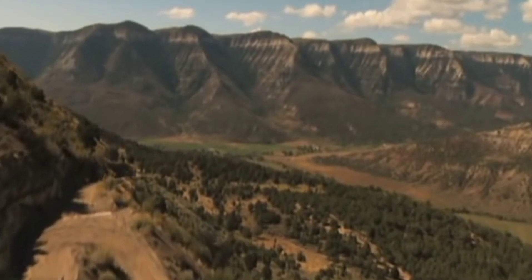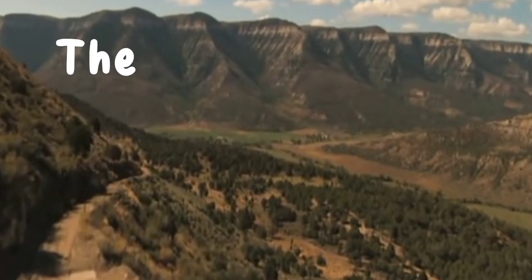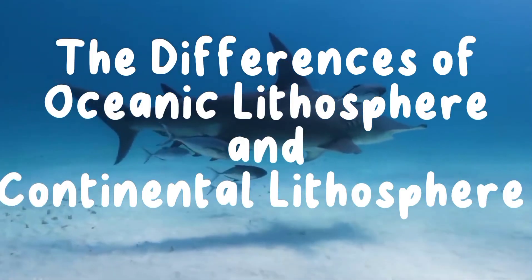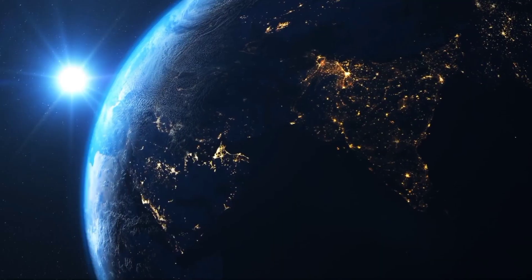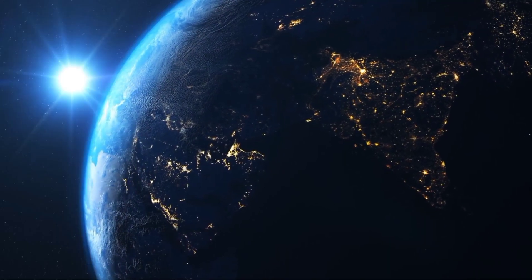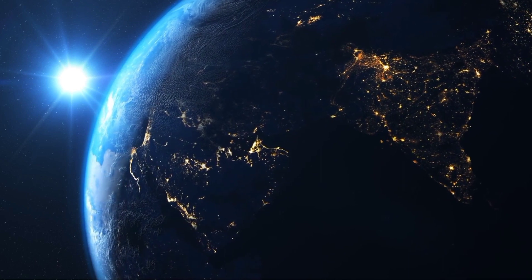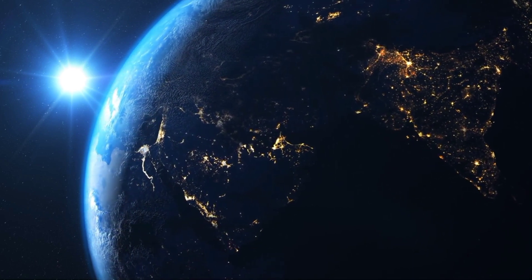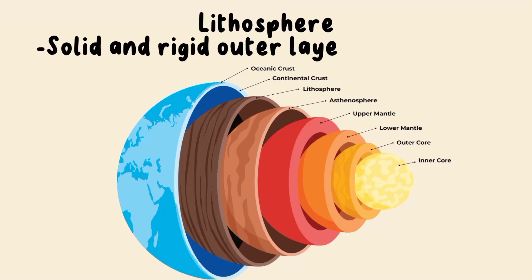Good day everyone. Today we will talk about the differences of oceanic lithosphere and continental lithosphere. But before we discuss those differences, let us first talk about the lithosphere — the solid and rigid outer layer of the Earth.